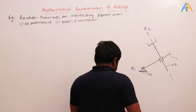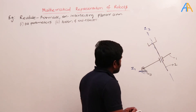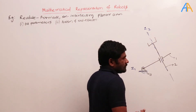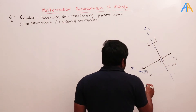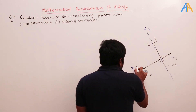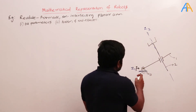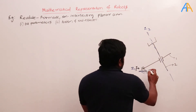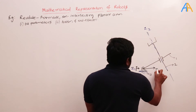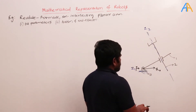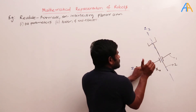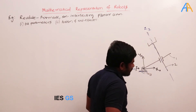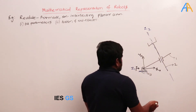Since the fixed base and the first link are joined by a revolute joint, we choose the coordinate axes to be coincident. So I choose z-naught along z1 — both are perpendicular to the plane because it is a revolute joint. x-naught lies in the plane, and y-naught is also in the plane. Now I need to find x1.